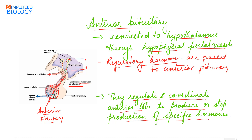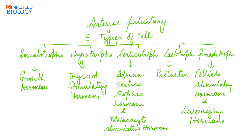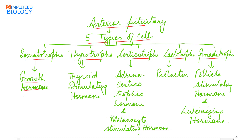These hormones regulate and coordinate the anterior lobe to produce or stop production of specific hormones. Upon receiving signals from the hypothalamus, the anterior pituitary stimulates cells to secrete hormones. The anterior pituitary consists of five principal types of cells: somatotropes, thyrotropes, corticotropes, lactotropes, and gonadotropes.